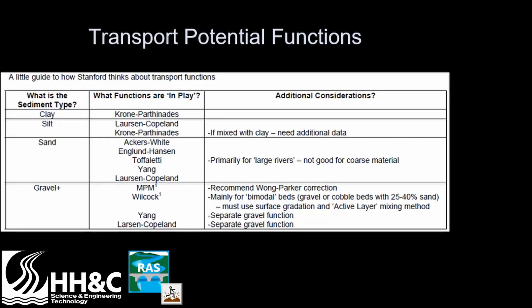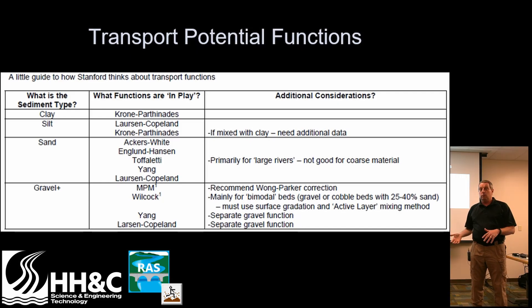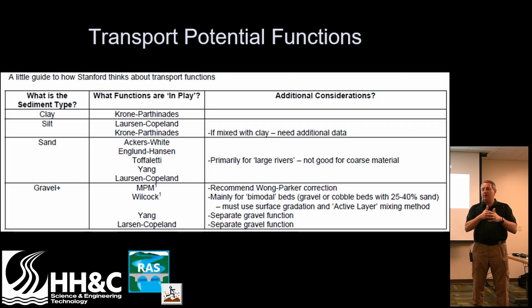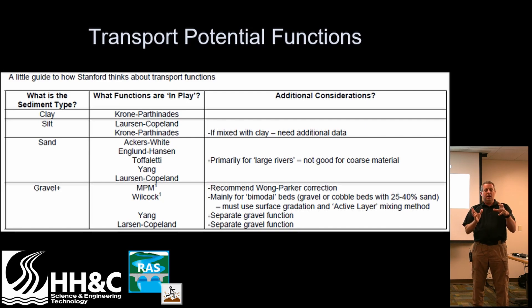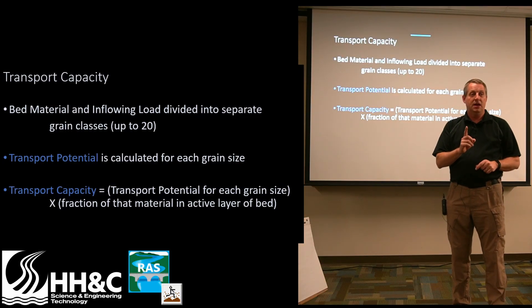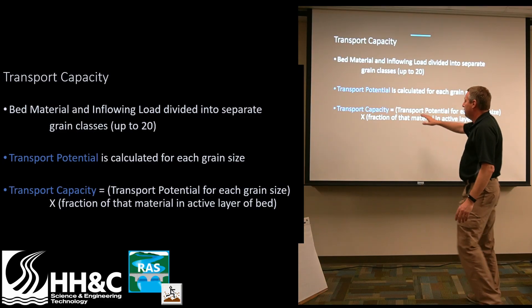That is the difference between potential and capacity. For selecting sediment transport functions, the process is: first rule out functions for physical reasons, then choose the one that best fits your data. It's a two-step process — a rule-out process and a selection process — and often multiple transport functions are still used in final calibration runs. When you apply a transport function to a single grain class, you get a transport potential. That's what transport potential is.